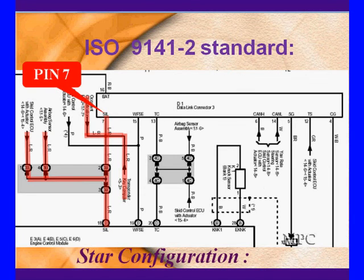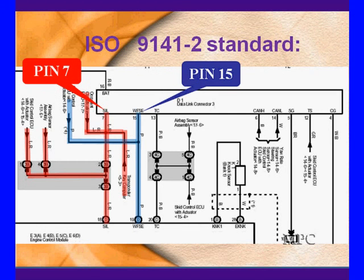Now let's start looking at diagrams. This is called SIL on a Toyota 2005 Corolla. This is a star configuration — we have three modules hooked up here coming out of a star, and two modules at a splice going off in different locations that are not part of the splice pack. This is the K line — the signal line. This is a two-wire system with pin 15 to initialize communications.